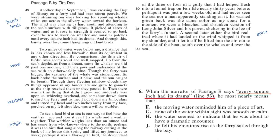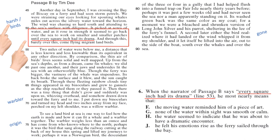Number six: when the narrator of passage B says 'every square inch had its drama,' he most nearly means what? We see that in line 53. We described this as 'harsh' because the water is rising — it goes back and forth over the sea, working on smaller and smaller patches until 'every square inch had its drama,' meaning until none of the water was smooth and calm. It's harsh, so the answer is G.